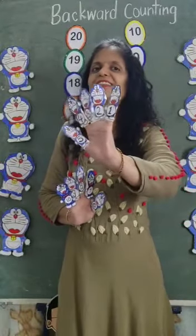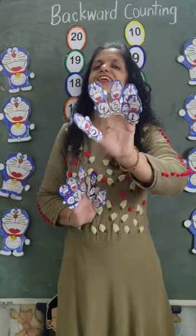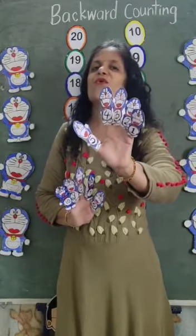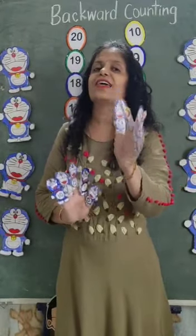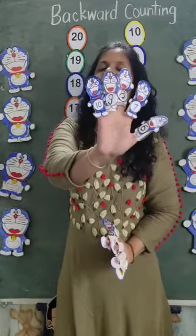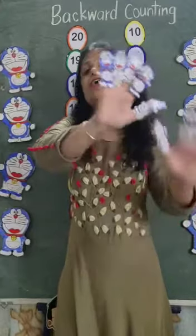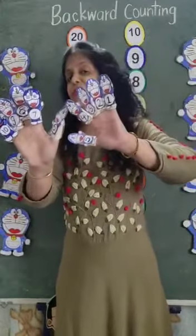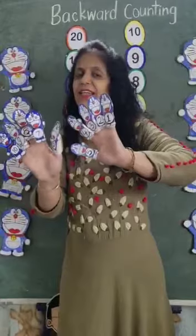1, 2, 3, 4, 5, then 6, 7, 8, 9, 10. So how many Doraeons? 10 Doraeons are there.